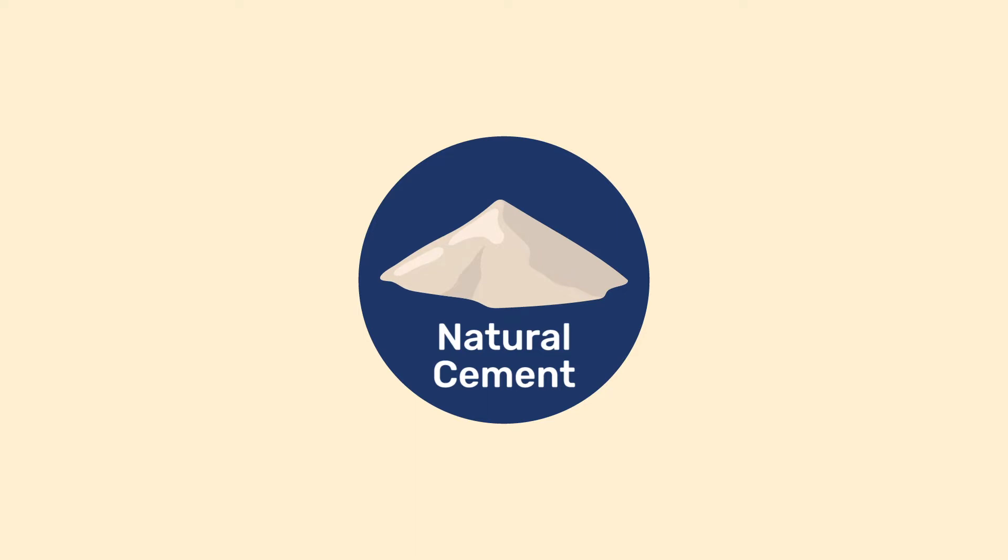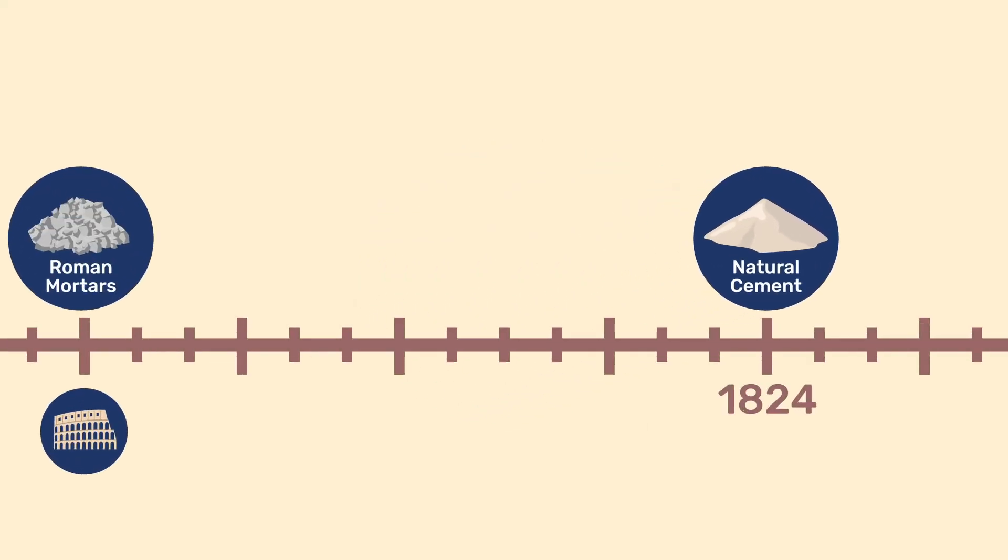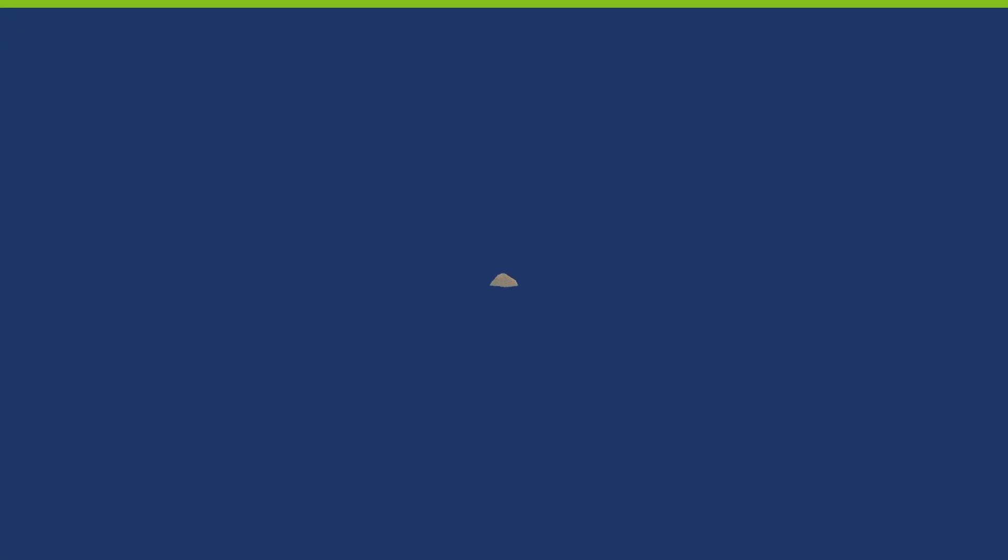This video establishes their chemistry as an intermediate position in the history of mineral binders between pozzolanic mortars and Portland cement. To understand natural cements, we must consider both their composition and firing temperature. In terms of composition, natural cements rely on using a single raw material.